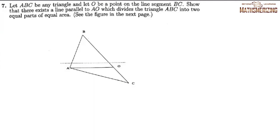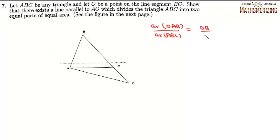Question 7: Let ABC be any triangle and O a point on segment BC. Show there exists a line parallel to AO dividing triangle ABC into two parts of equal area. We write: area(OAB)/area(ABC) = OB/BC = r. If r = 1/2, the result is trivial, so without loss of generality assume r > 1/2.